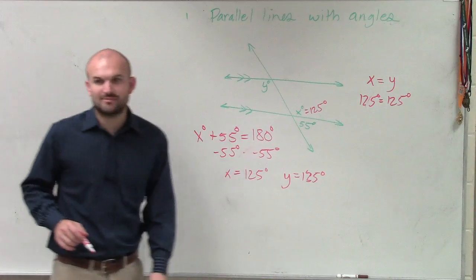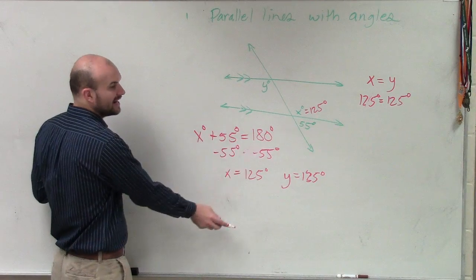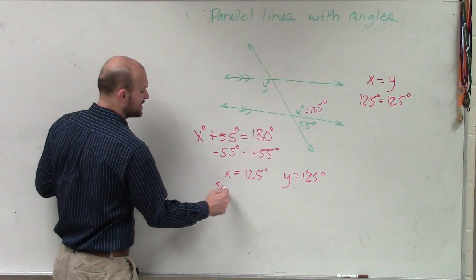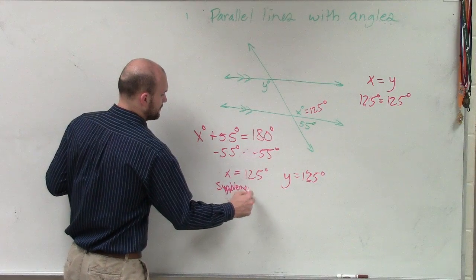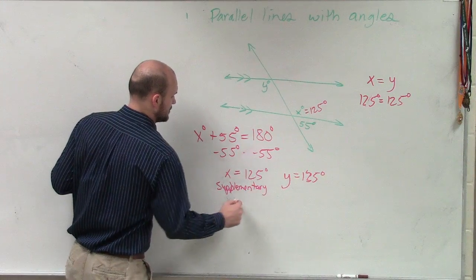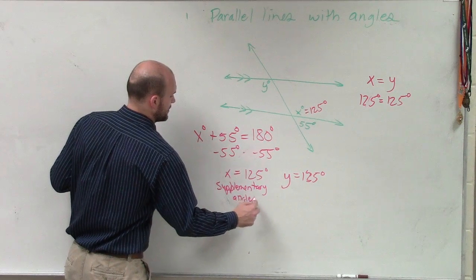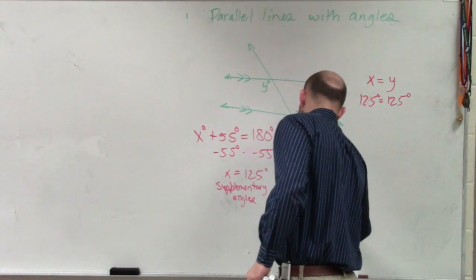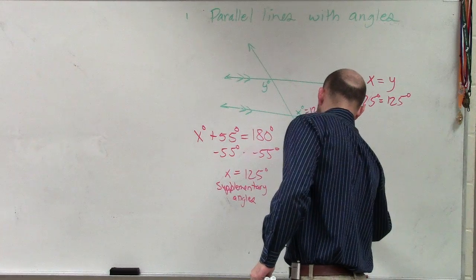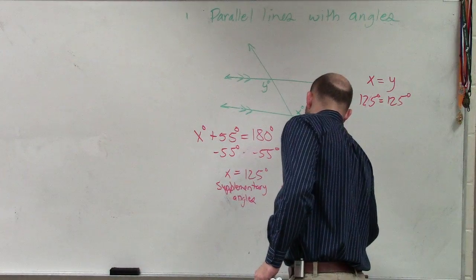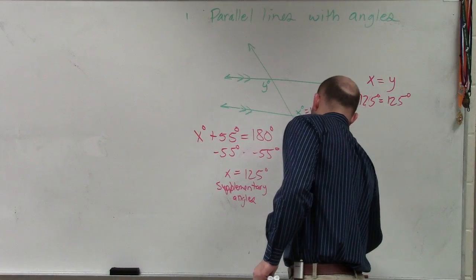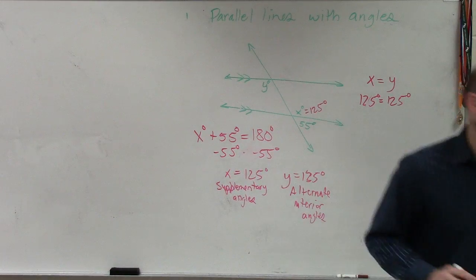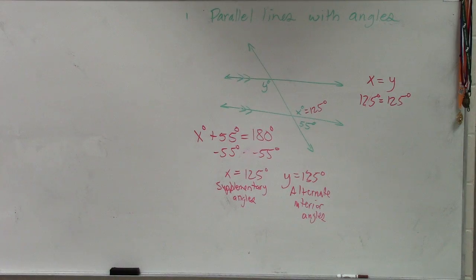Now, again, let me go back to my justification. I justified this is 125 degrees by supplementary angles, and I justified y was 125 degrees by alternate interior angles. All right? Please don't get in the habit of not writing in your justification.